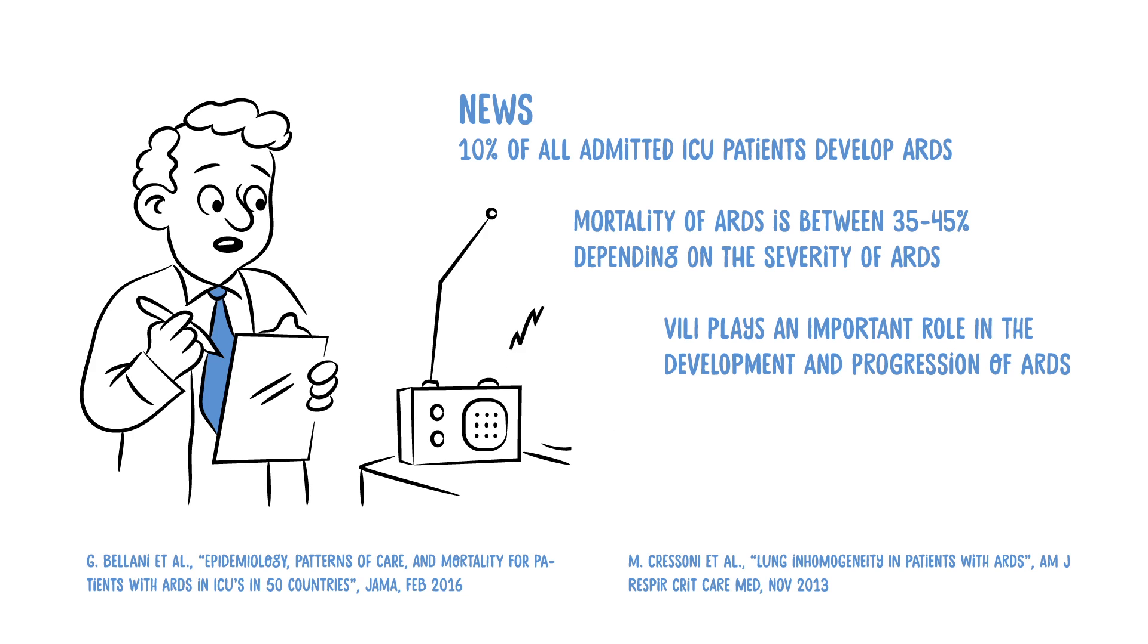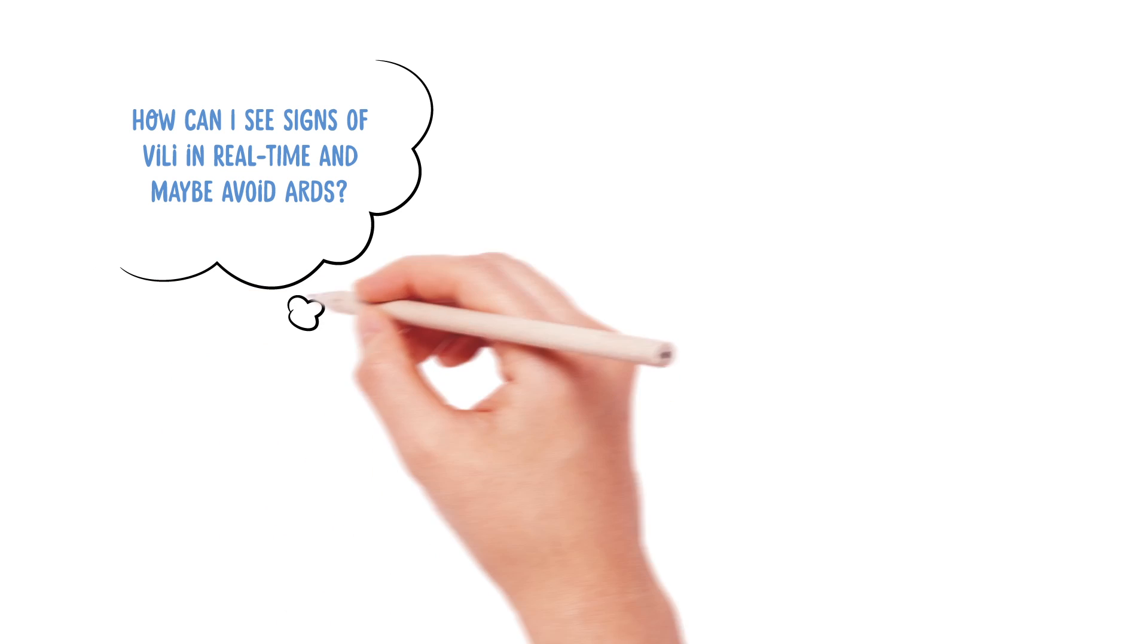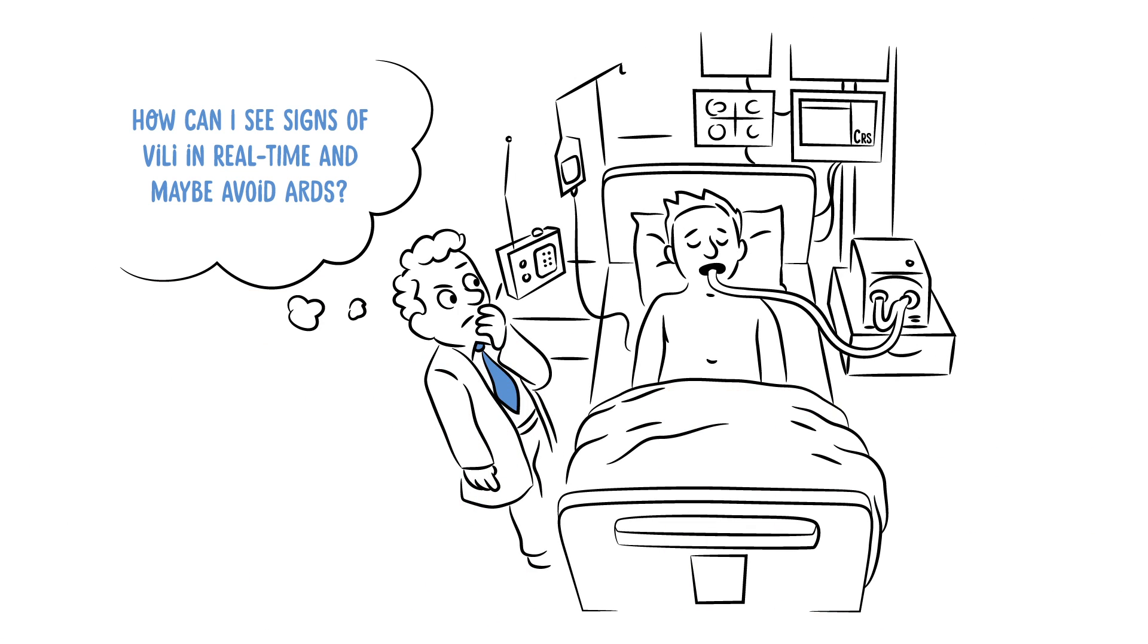Ventilator-induced lung injury has a major impact on patient mortality and can lead to ARDS. But how can we see signs of VILI in real time and maybe avoid ARDS?